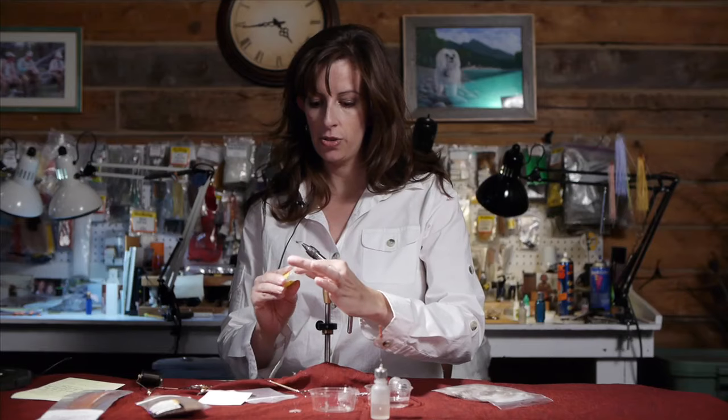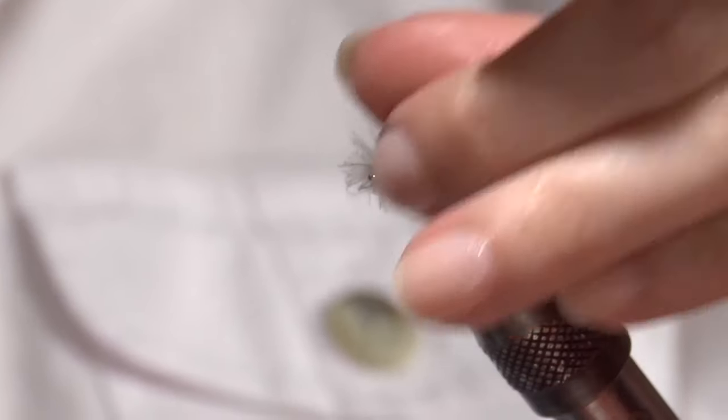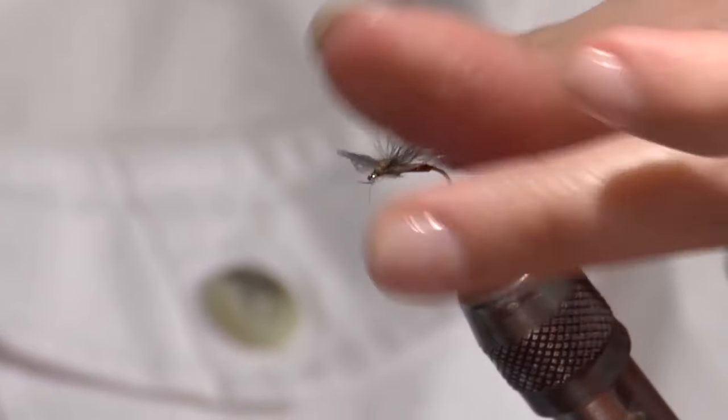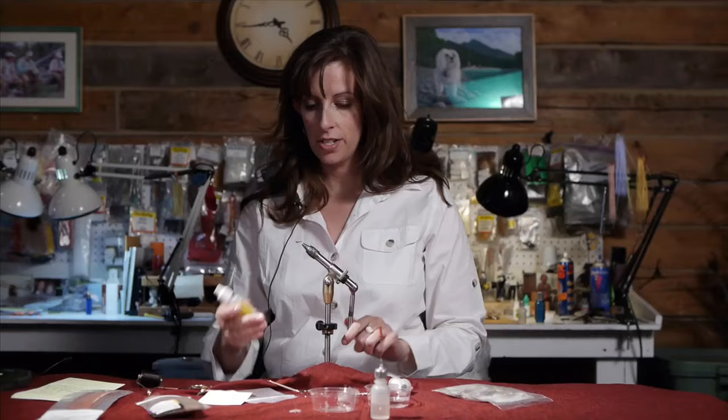And then I smear it into the CDC wing. A little drop of head cement. And there is my rusty spinner.